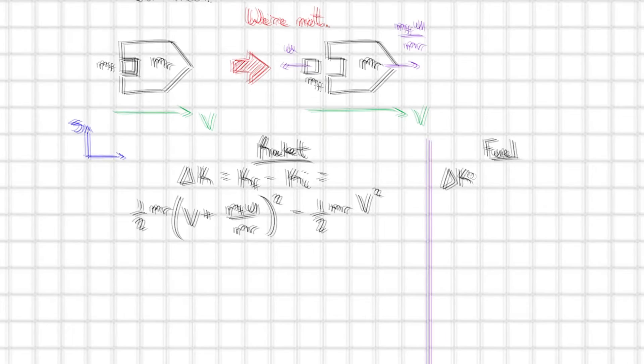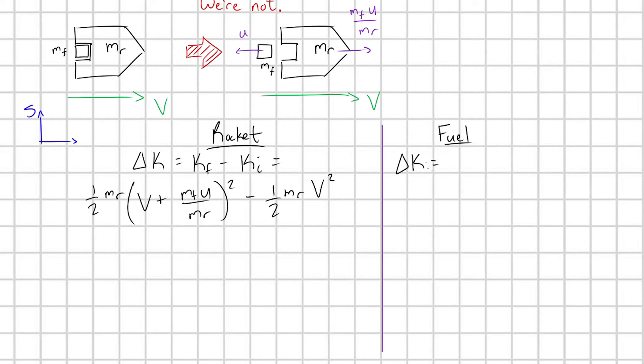What about for the fuel? The fuel's changing kinetic energy equals K final minus K initial. It's going to be equal to one half MF. The fuel's final velocity is going to be capital V minus U squared. You take this difference now. And of course, its initial kinetic energy, one half MF times capital V squared.